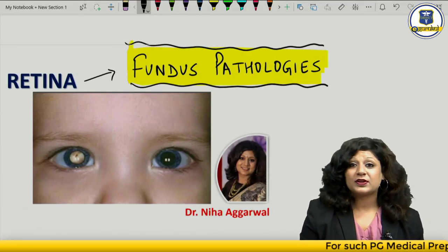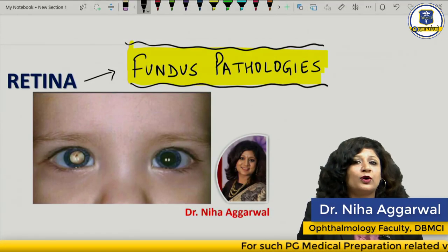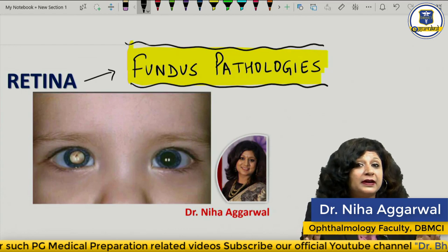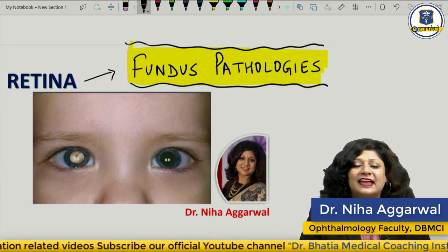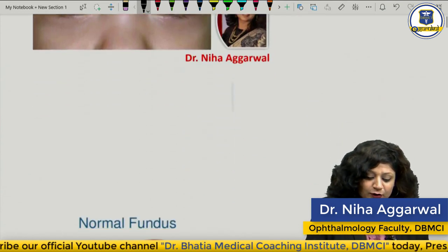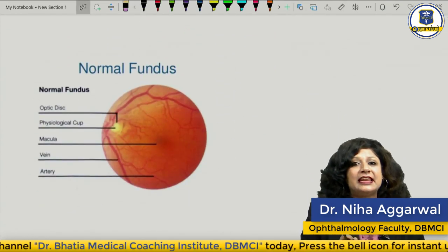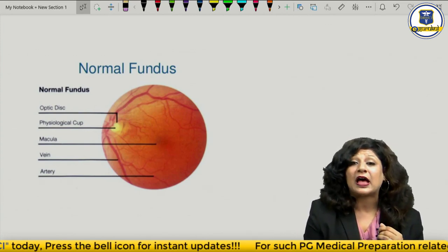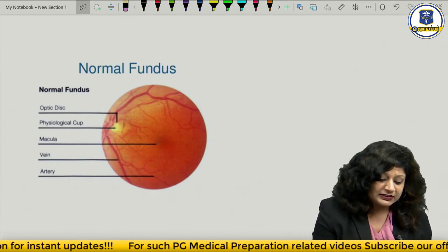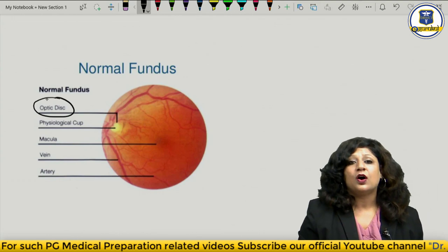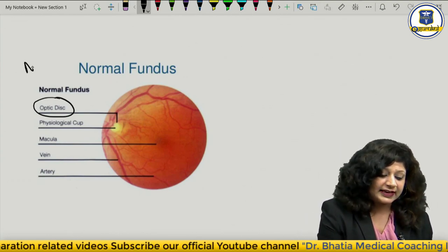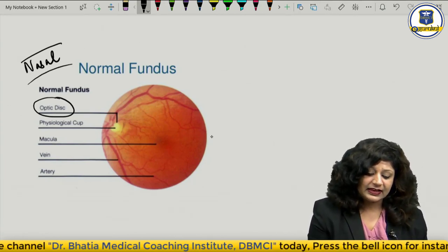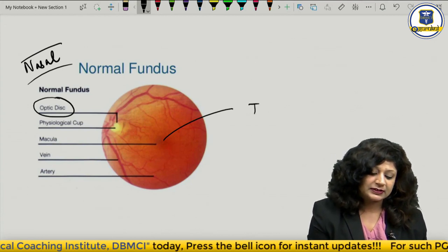Hello friends. Today I am going to take a very important, interesting, and dynamic topic which I have received an unbeatable number of requests to cover, and that is fundus pathologies. Before going into the details of fundus pathology, let's have a look at the normal fundus. When you see the normal fundus, the first important thing is the optic disc, which is always present on the nasal side, while the macula will be on the temporal side.